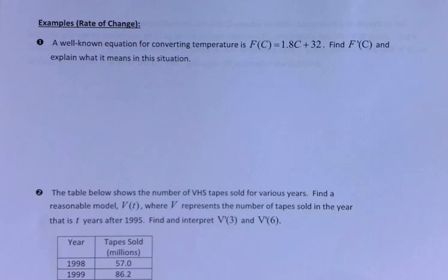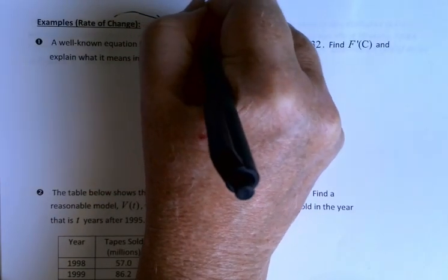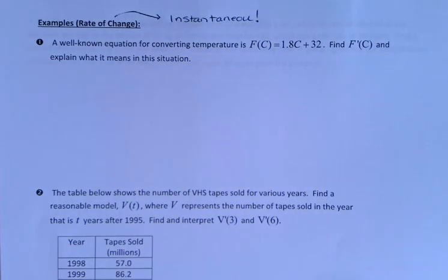We're continuing with topic F here. We've been looking at the applications of derivatives, and we saw that the derivative can be considered as the slope of the tangent line. We can think of the derivative as velocity of a position function, and we're now going to look at the derivative in general as a rate of change. So let's look at a couple of examples.